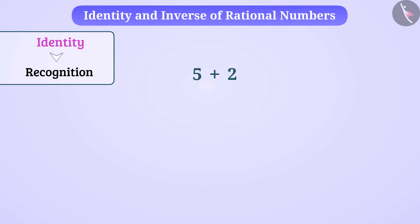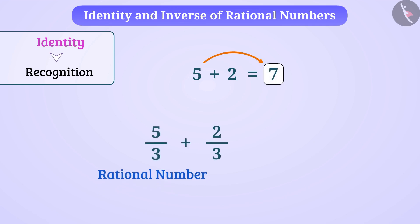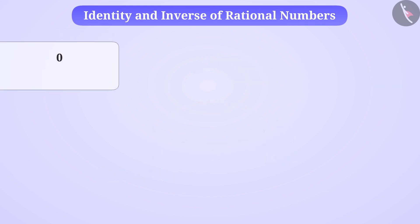Like adding 2 with 5 changes the value of 5 to 7. Similarly, adding 2/3 to the rational number 5/3 changes its value to 7/3. However, identities of numbers do not change in some special cases. In all rational numbers, 0 is the only number which when added to any number gives the same number. The identity of the rational number does not change.